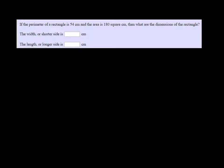If the perimeter of a rectangle is 54 centimeters and the area is 180 square centimeters, then what are the dimensions of the rectangle?